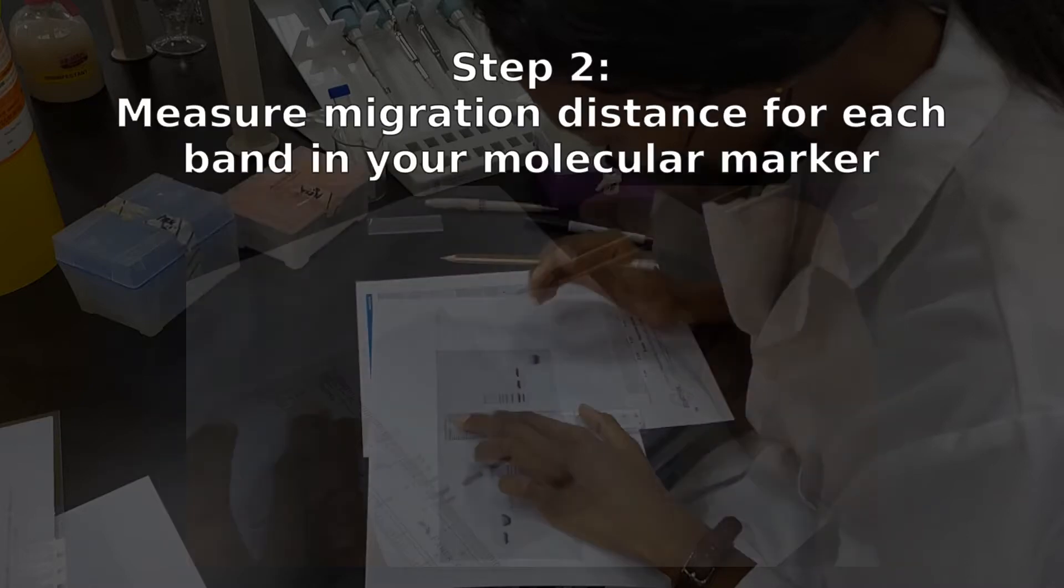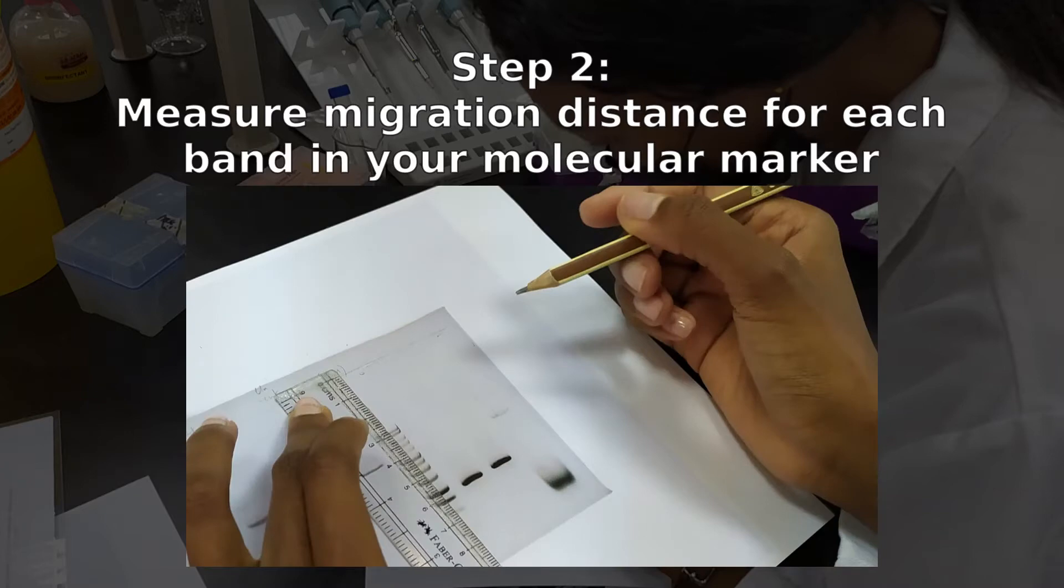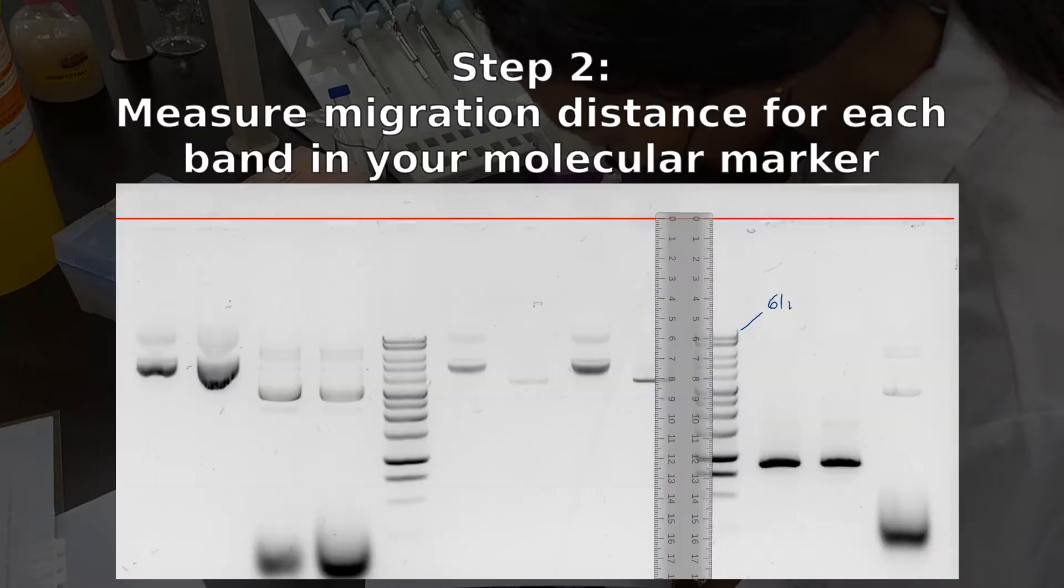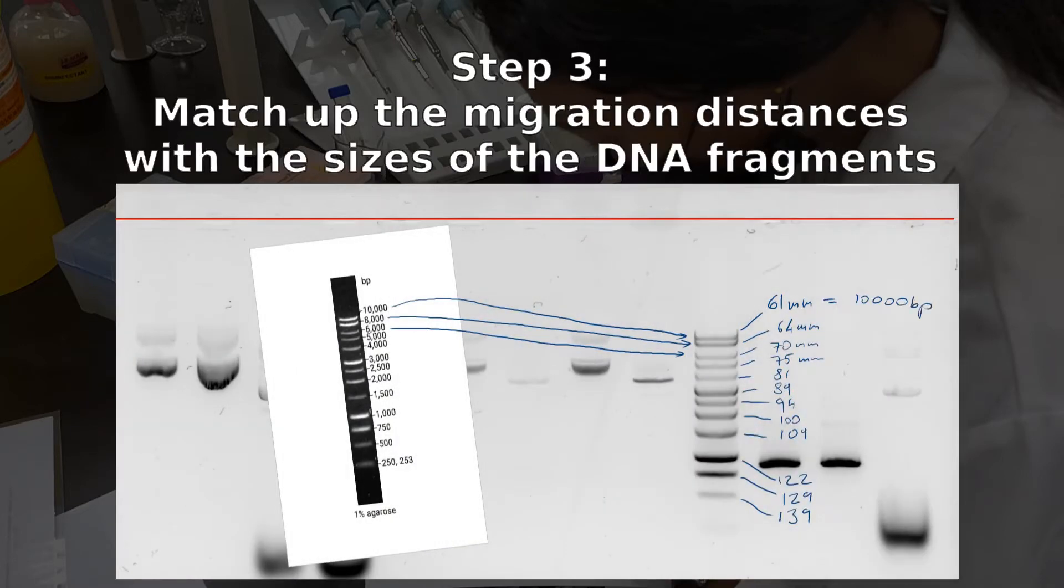You will then use this straight line as a base from which to measure the distance to each of the DNA fragments on the molecular weight marker. Basically, what you want to do is find out how far each of those DNA fragments has migrated. You will then assign sizes to each of those DNA fragments based on the molecular weight marker that you ran in the lab.